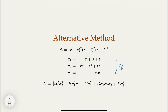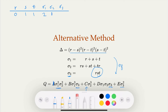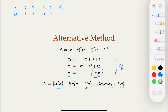We can choose special values of R, S, T to make it easy to identify coefficients. For example, let's try to make sigma 3 go to zero. If sigma 3 = 0, the terms containing sigma 3 vanish and we can solve for C immediately. Setting R = 0, S = T = 1: sigma 1 = 2, sigma 2 = 1, sigma 3 = 0.